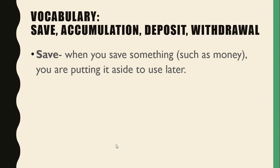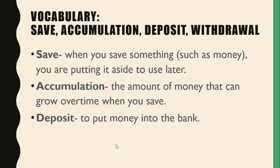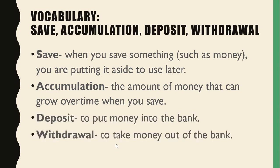Save is when you save something such as money — you are putting it aside to use later. Accumulation is the amount of money that can grow over time when you save. Deposit is to put money into the bank. Withdrawal is to take money out of the bank.